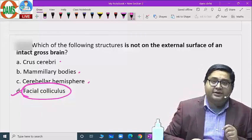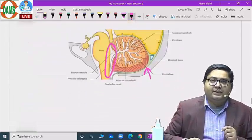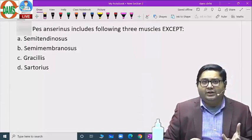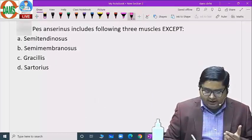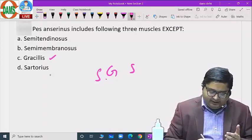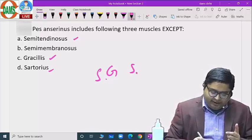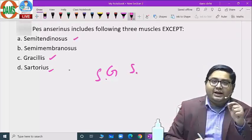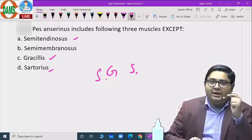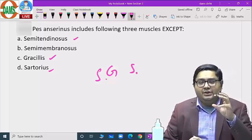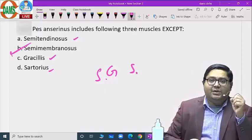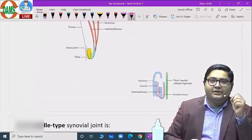It cannot be seen from outside. Answer is D. Next question is pes anserinus. Pes anserinus consists of what? We have the mnemonic: the girl between two surgeons. Important point to remember is G is the gracilis, this S is sartorius, this S is semitendinosus. Even semitendinosus fits in the mnemonic, but we have to remember that semitendinosus is the part, semimembranosus is not the part. Answer is B semimembranosus.